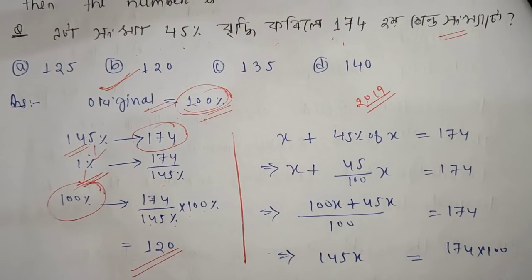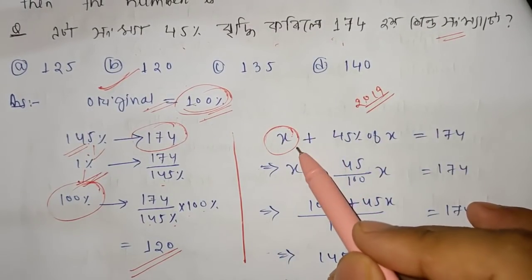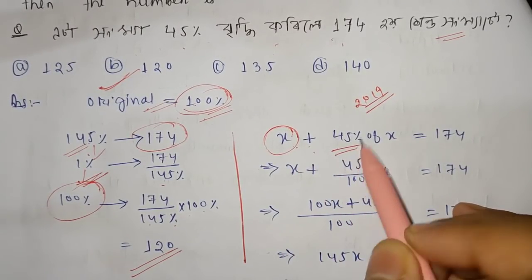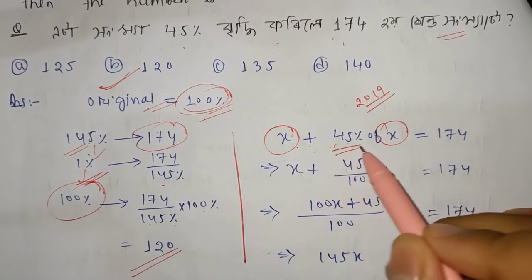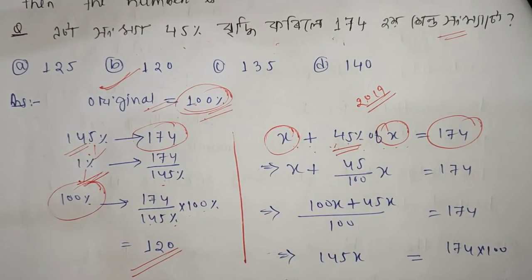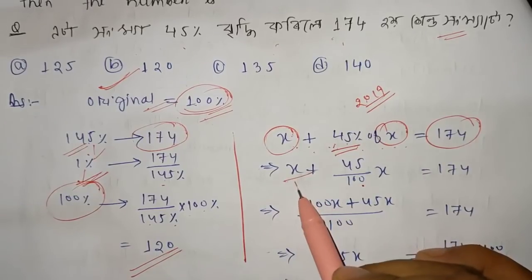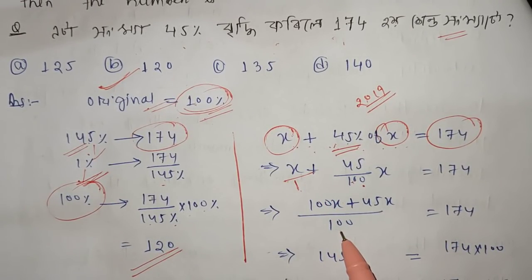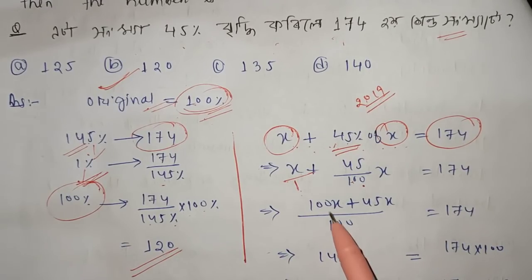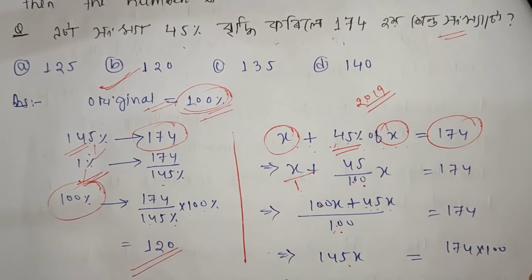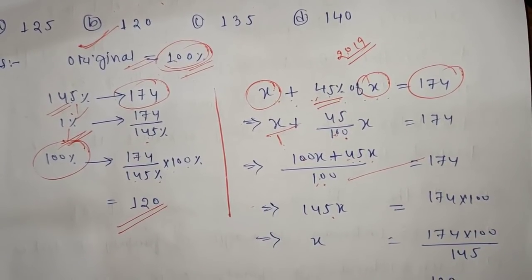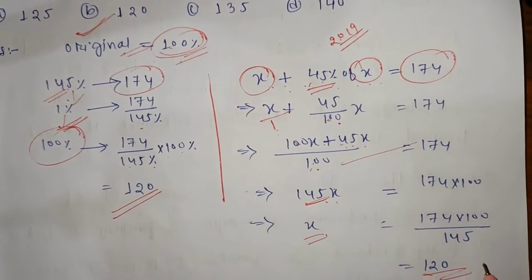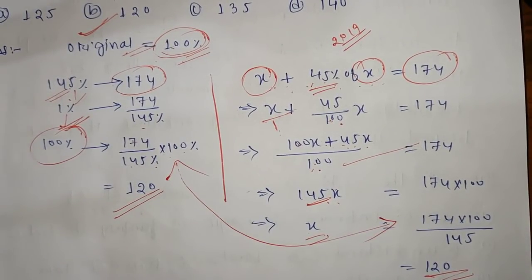If you solve the same problem using the normal method: let x be the original number. Then x plus 45% of x equals 174. Converting the percentage, x plus 45/100 times x equals 174. So 100 plus 45 equals 145x. Cross multiplying, 145x equals 174 into 100, and x equals 174 divided by 145 into 100, which gives 120. The percentage method and the normal method give the same result.